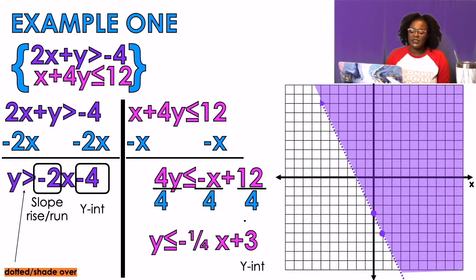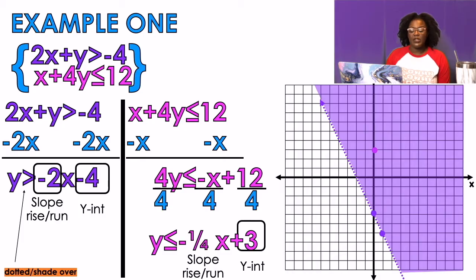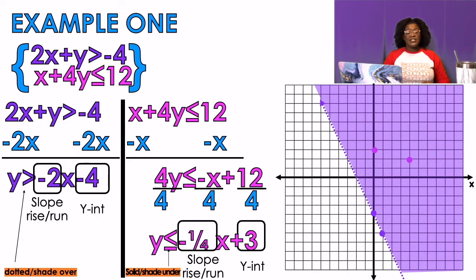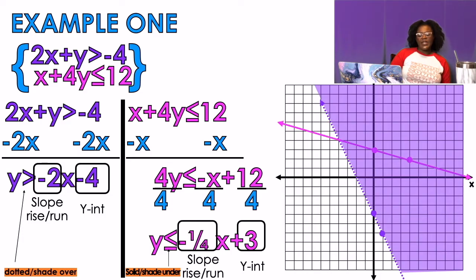My y-intercept is 3, so I plot that on the graph. My slope is -¼, so I go down one space and run over four spaces. My symbol is less than or equal to, so two things: the less than means shade under, and the equal to means it's a solid line. So I draw a solid line and shade under.